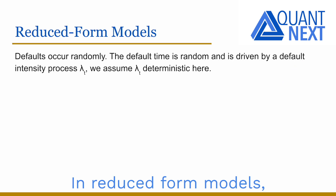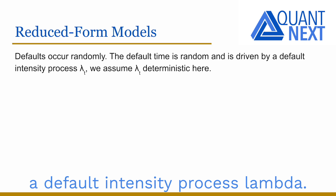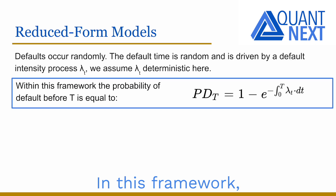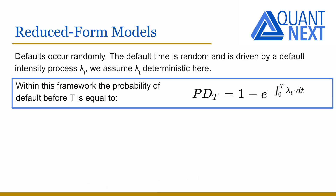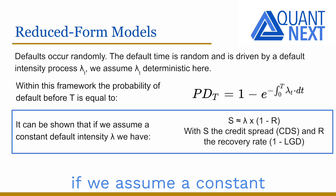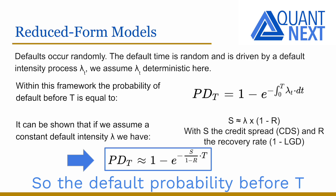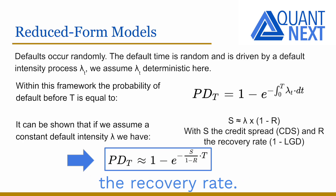In reduced form models, defaults occur randomly. The default time is random and is driven by a default intensity process lambda. Assuming lambda is deterministic, the default probability P(t) can be expressed as a function of the integral of lambda between 0 and t. It can be shown that if we assume a constant default intensity lambda, the credit spread s of the debt is approximately equal to lambda times one minus the recovery rate r. So the default probability P(t) can be directly expressed from the credit spread if we fix the value of the recovery rate.